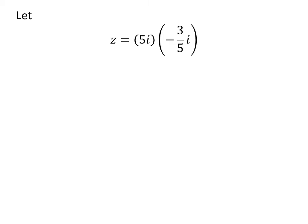Let us assume z be equal to 5 times i times minus 3 upon 5 times i. Cancelling out the common factor 5 in the numerator and the denominator gives us z is equal to minus 3 times square of i.